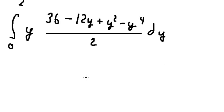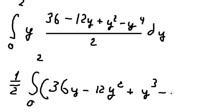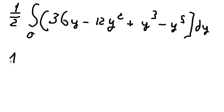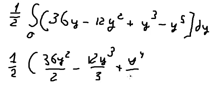I will factor out one-half and multiply through. We get terms: 36y, minus 12y squared, plus y cubed, minus y to the power of 5. Integrating each term gives: 36y squared over 2, minus 12y cubed over 3, plus y to the power of 4 over 4, minus y to the power of 6 over 6.